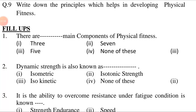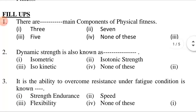Now for the multiple choice questions. There are dash main components of physical fitness. First option: 3. Second option: 7. Third option: 5. Fourth option: none of these. The answer is the third option — 5. There are 5 main components of physical fitness.